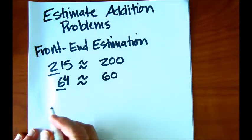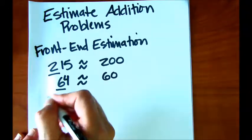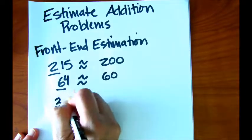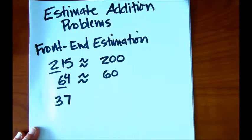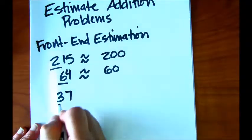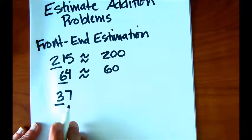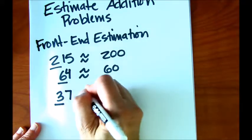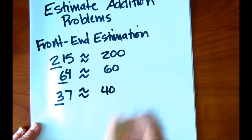Let's try one where we're going to be doing some rounding. Let's say we have 37. Again, looking at the front number, we're going to be rounding this to 40. So this is approximately 40.